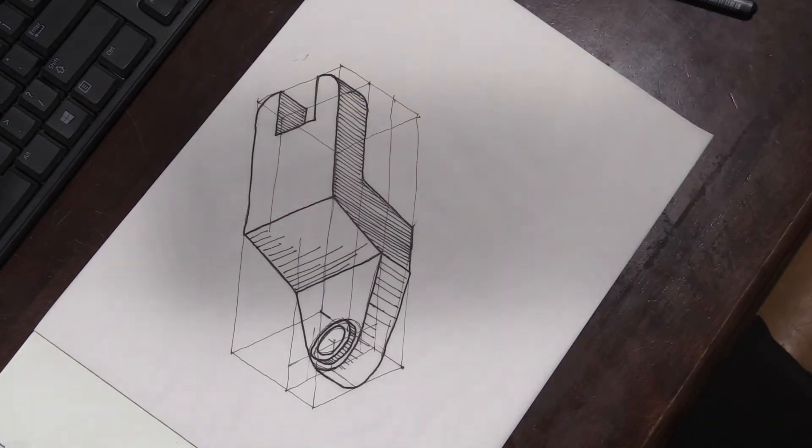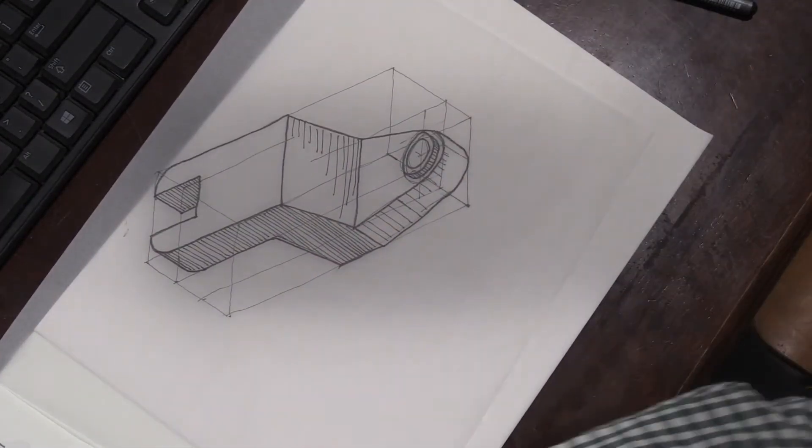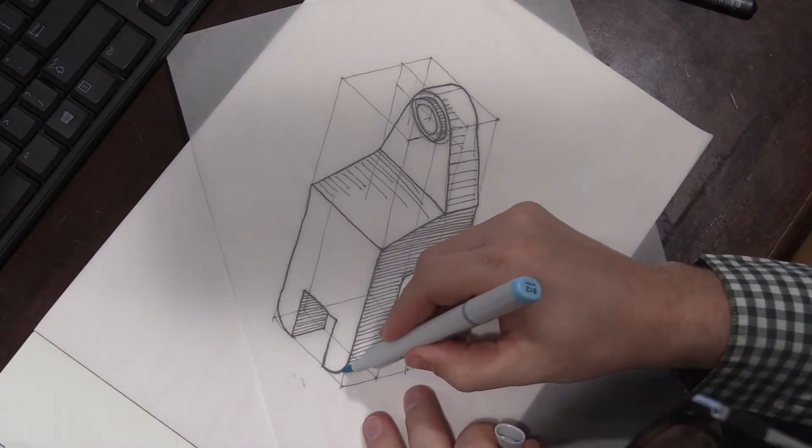You can see here I have my darkest hatching lines and then my medium hatching line.